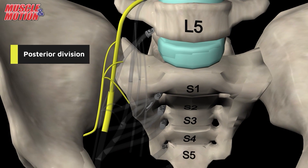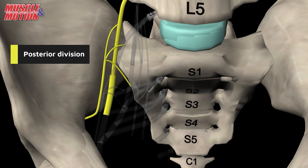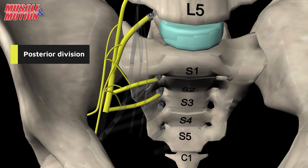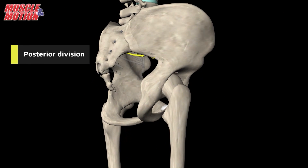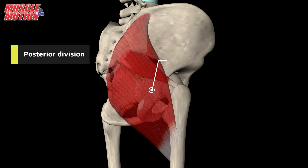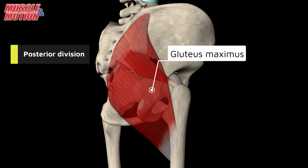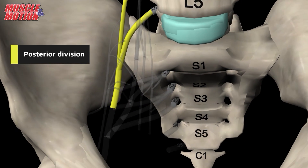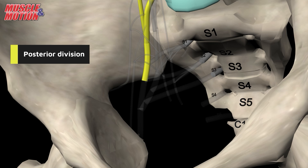The inferior gluteal nerve arises from spinal nerves L5, S1, and S2, and innervates the gluteus maximus muscle. The nerve to the piriformis arises from the roots of spinal nerves S1 and S2.